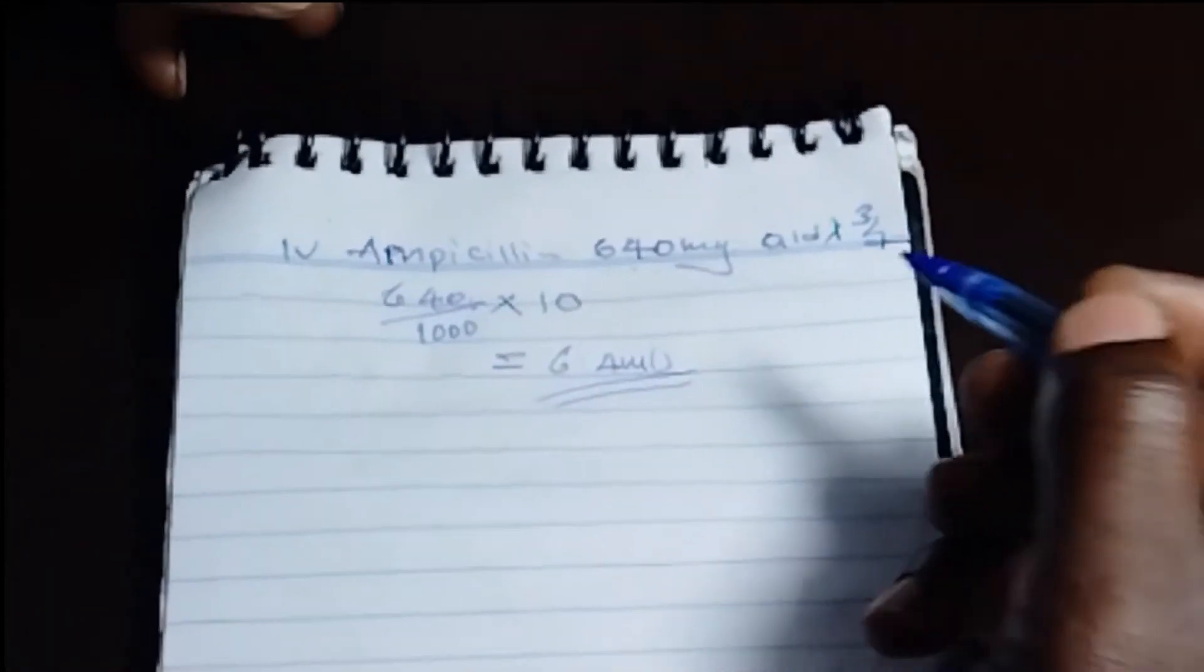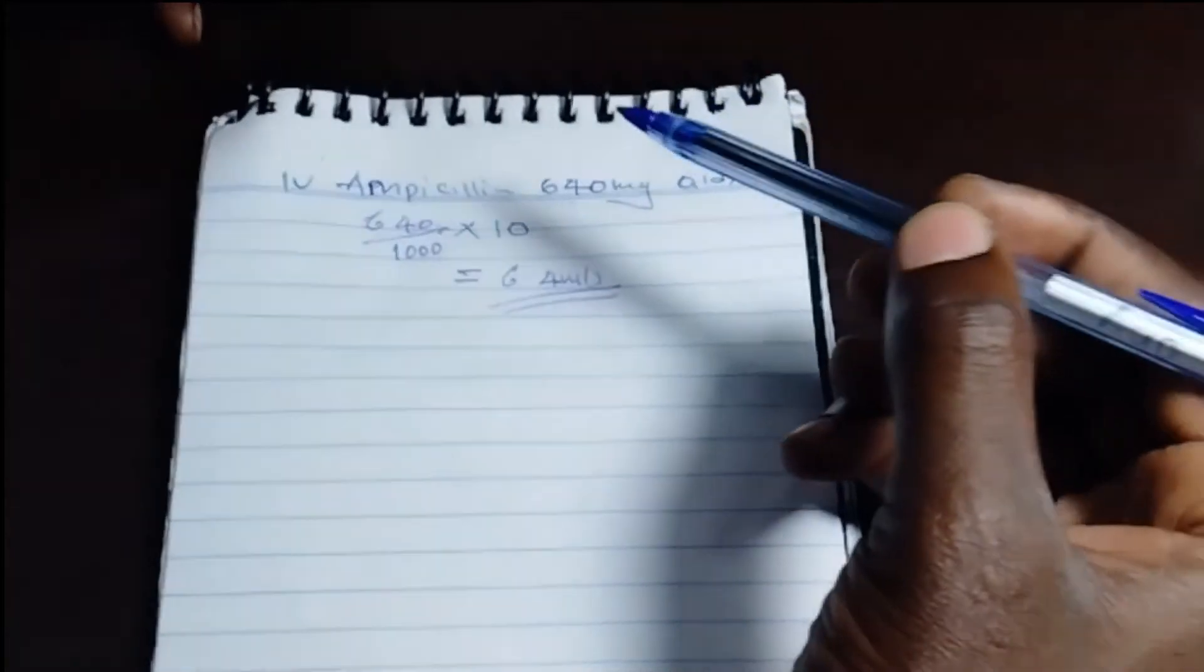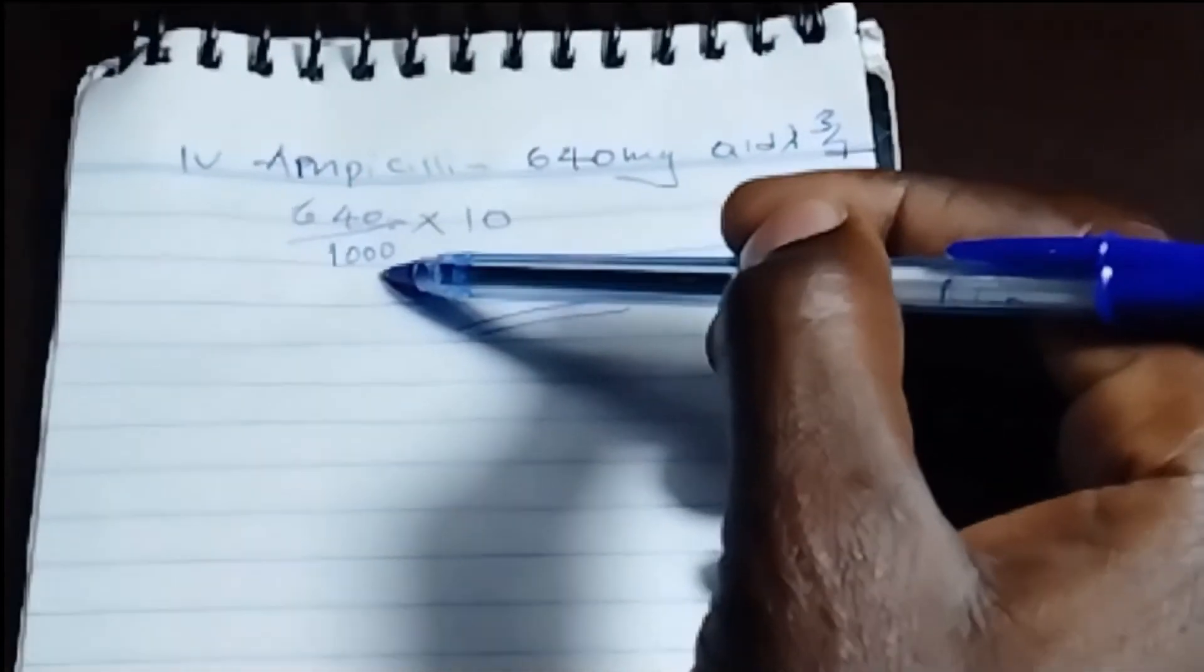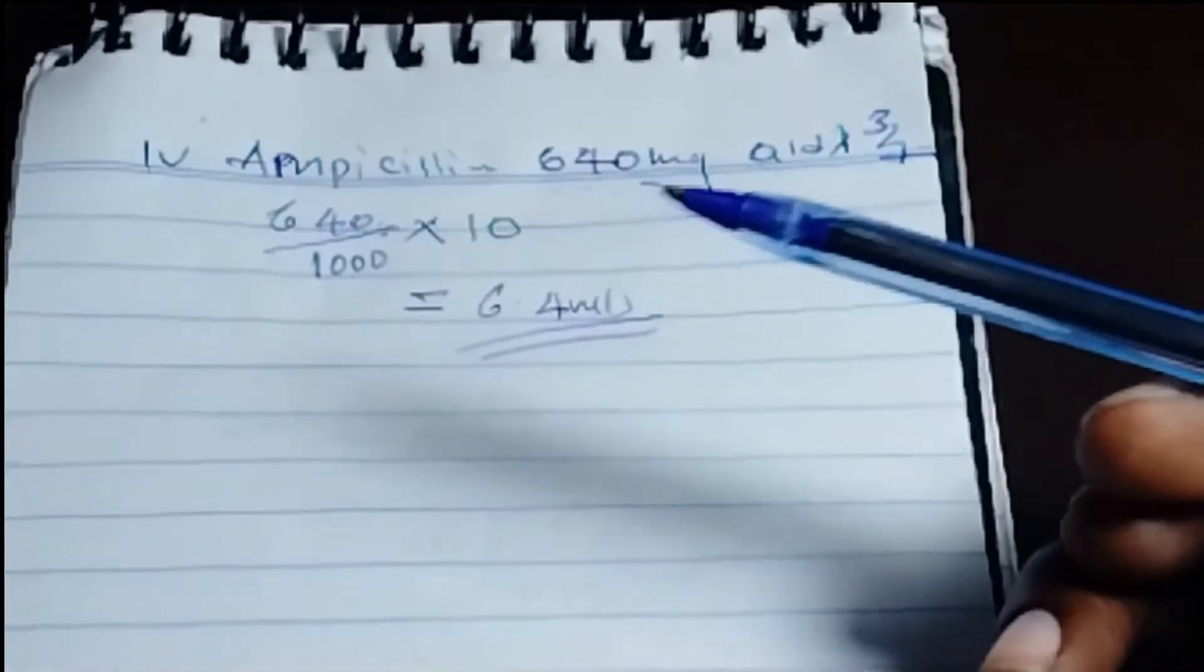So that is how we calculate this. For any drug, you will use the same formula: prescribed over the milligrams, times the dilution volume.